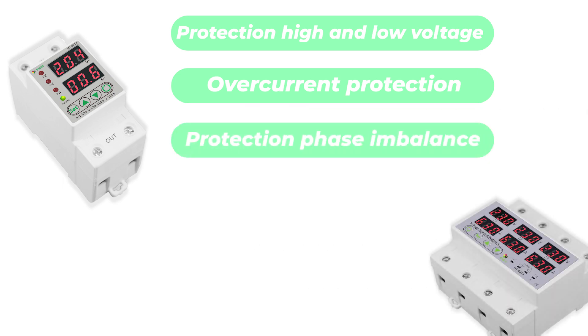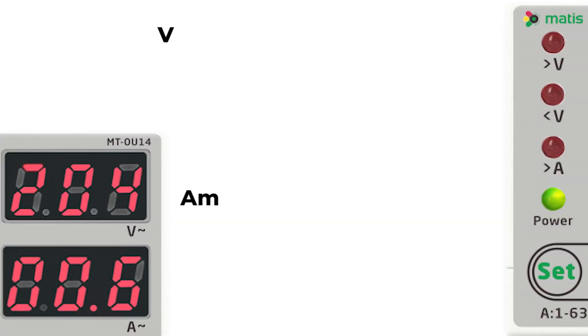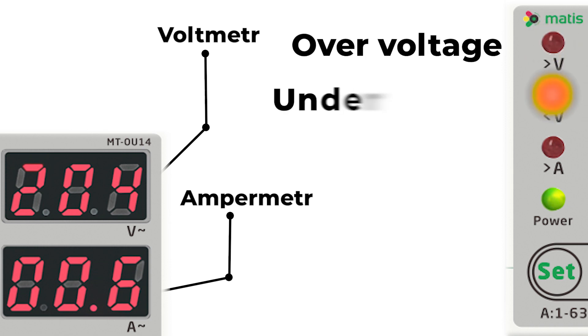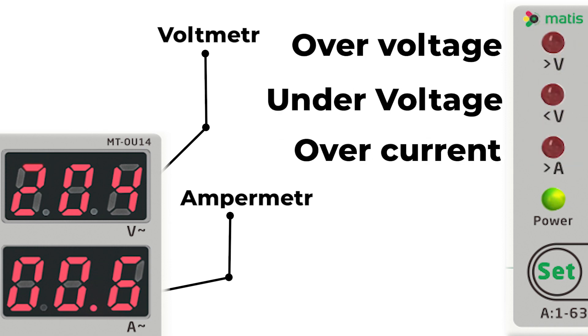There is also automatic switching on, a flame retardant shell and time setting in case of various accidents. The display in the front of the device allows you to monitor the state of voltage and operation in real time, and various indicators will indicate the cause of accidents.